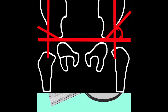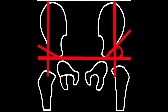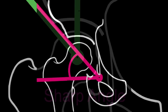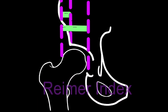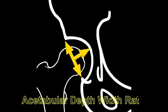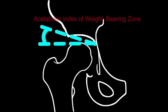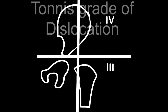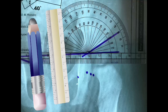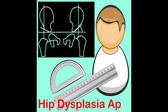Measurements of indexes like the acetabular index, the center edge angle, the Sharp's angle, Reimer index, acetabular depth-width ratio, the congruity index, congruence index, acetabular index of the weight-bearing zone, and grade of dislocation are important for an orthopedic surgeon who wants to objectively assess and monitor the hips on standard radiographs. These measurements are usually performed on one x-ray by the traditional way, which is time-consuming and cumbersome.